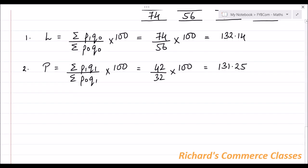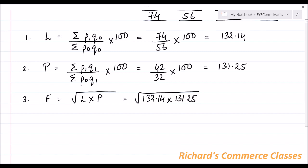And finally, Fisher's Index Number: F = √(L × P) = √(132.14 × 131.25) = √17,343.375 = 131.69.